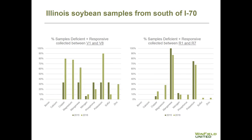Looking at samples from south of Interstate 70 in Illinois — divided between vegetative and reproductive growth stages — note that a smaller number of samples contributed to this database for south of Interstate 70. Manganese is deficient in soybean in southern Illinois 100 percent of the time in 2015, and 85 percent of the time in 2016. Potassium is also very limiting and deficient, particularly early in the growing season between V1 and V8.